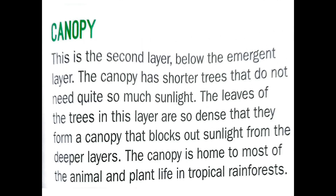Next is the canopy, the second layer below the emergent layer. The canopy has shorter trees that do not need quite so much sunlight. The leaves of the trees in this layer are so dense that they form a canopy, blocking out sunlight from the deeper layers. The canopy is home to most of the animal and plant life in the tropical rainforest.